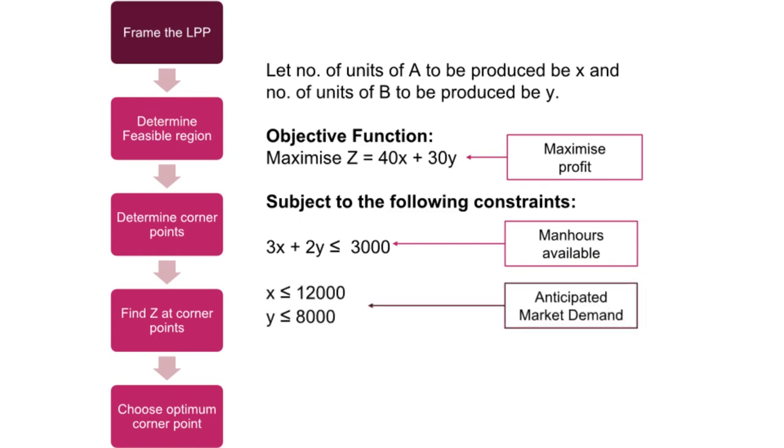Second, from the anticipated market demand of 12,000 and 8,000 units for A and B respectively, we get X less than equal to 12,000 and Y less than equal to 8,000. Finally, since we cannot produce negative number of products, we take X and Y to be greater than equal to zero.